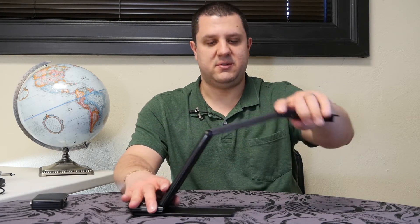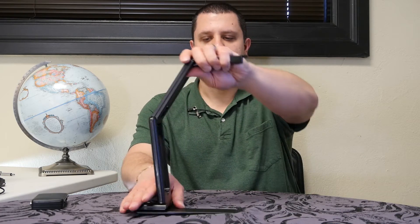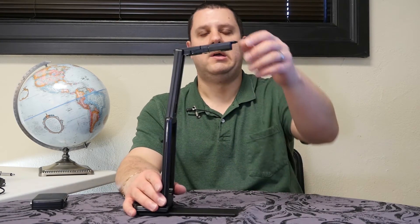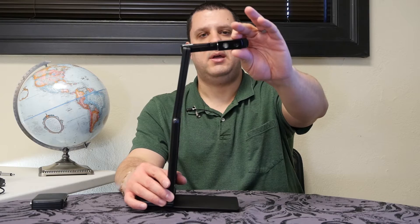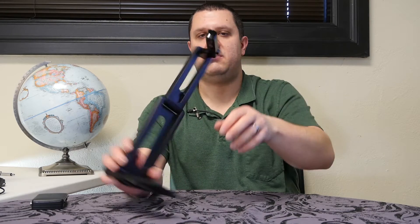So what this unique neck allows is for multiple positions, whether you want to get it real low against an object or paper, or if you need to make it up high so you can have maximum viewing area. The head also turns so you can have it look at yourself and use it as a webcam.